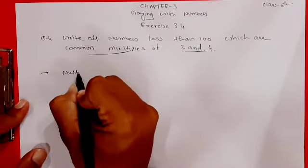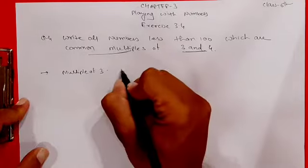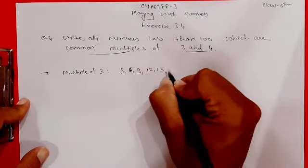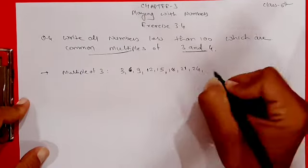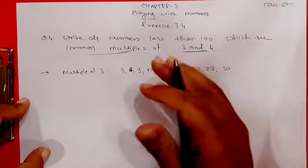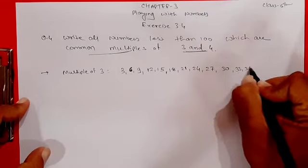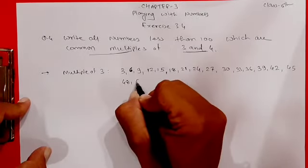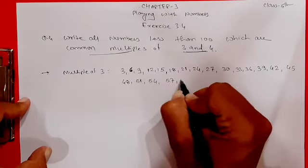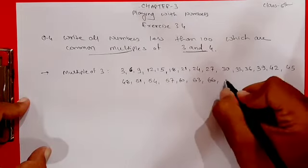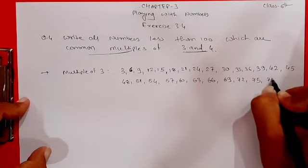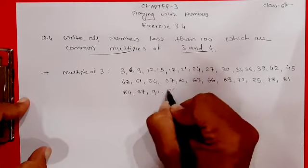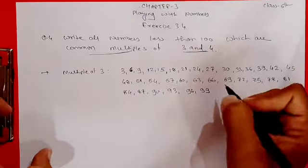First of all, let's find multiples of 3. So the table of 3: 3, 6, 9, 12, 15, 18, 21, 24, 27, 30, 33, 36, 39, 42, 45, 48, 51, 54, 57, 60, 63, 66, 69, 72, 75, 78. We are writing up to 100.